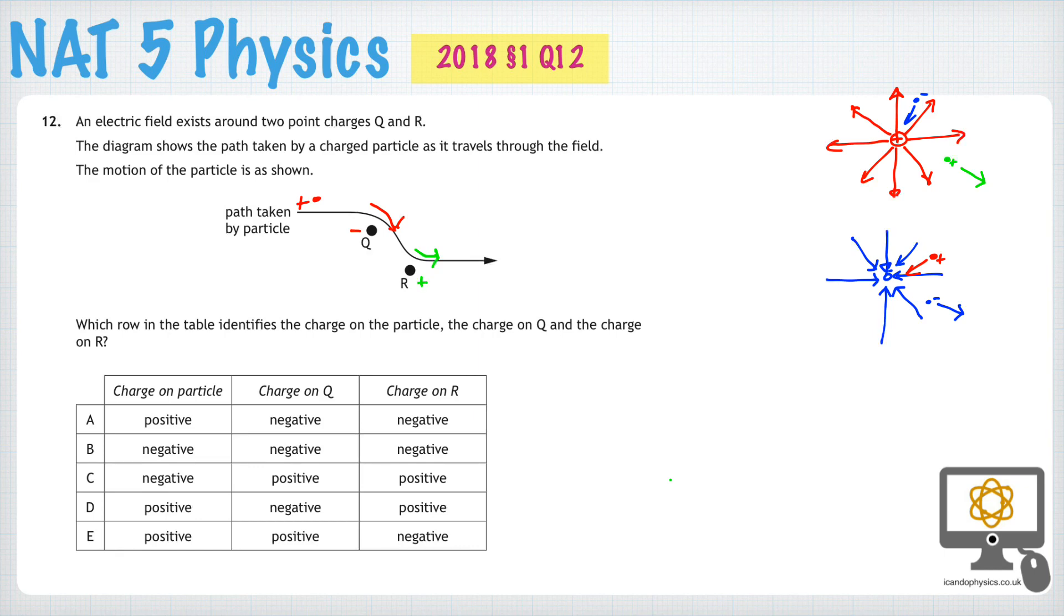If we now look for this combination, the particle is positive, so that would be here, or here, or here. Q is negative, that must be here or here. And R is positive, that must be here. Therefore, the only one that's correct in all three cases is D. So D is the correct answer.